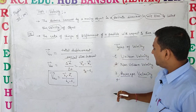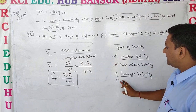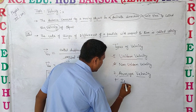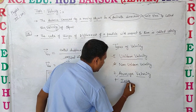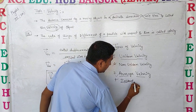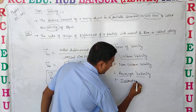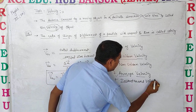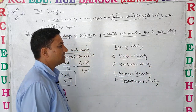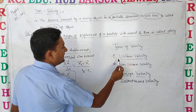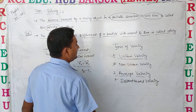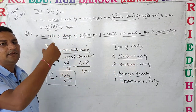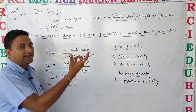Next, number four: instantaneous velocity. Instantaneous velocity is the velocity of an object at a particular instant of time, defined over a fixed time interval and fixed displacement in a particular direction.